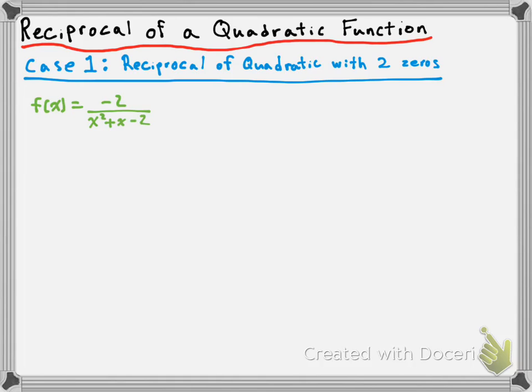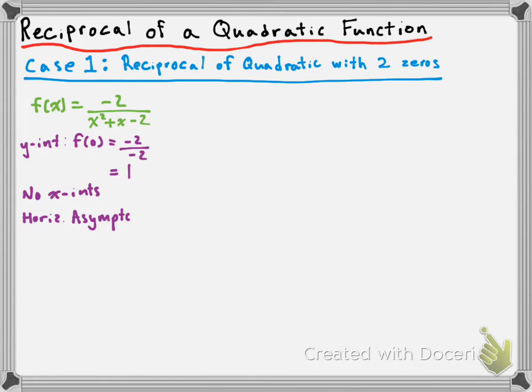We're going to start by listing some of the critical properties, starting with the y-intercept. The y-intercept occurs at f of zero. Subbing zero in for x, we get negative two over negative two, which gives us a y-intercept of one. Next, since this is the reciprocal of a quadratic with a constant in the numerator, we have no x-intercepts, and we have a horizontal asymptote at y equals zero.